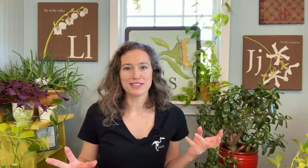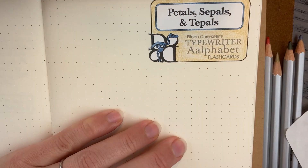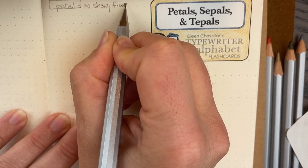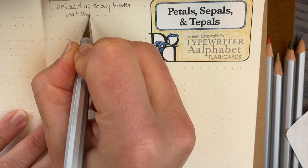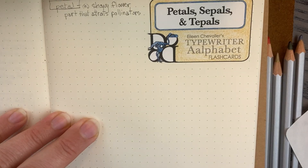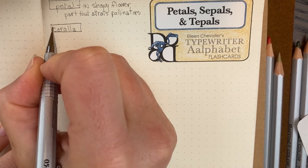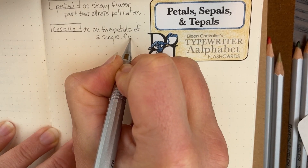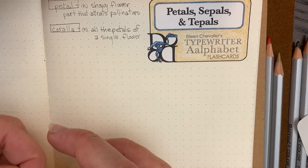Now get out your journal and get ready to write a lot of definitions. We're going to start with petal. A petal is the showy flower part that attracts pollinators. Under petal, the next thing to know is corolla — the corolla is all the petals of a single flower.